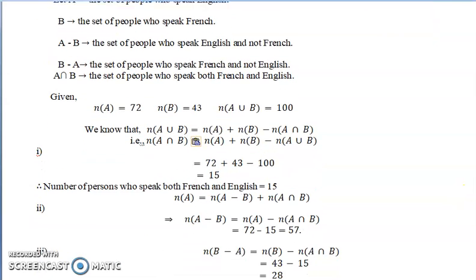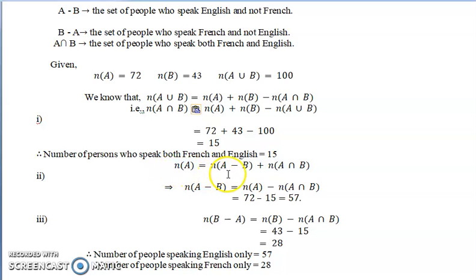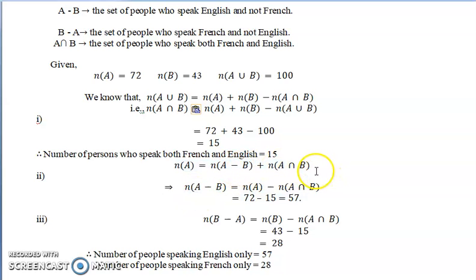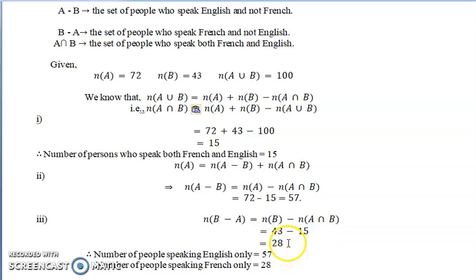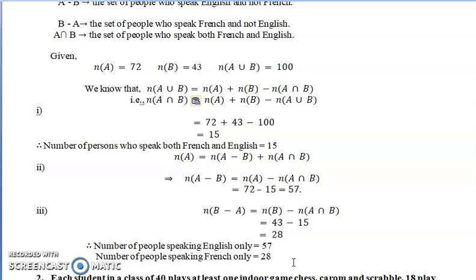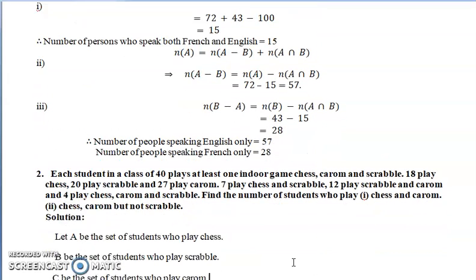Now for question two — how many can speak French only? Using the formula n(A) = n(A−B) + n(A∩B), we rearrange to find n(A−B). A indicates people who speak only English; A minus B subtracts French speakers, and A∩B is the common term. Replacing the values gives 57, meaning 57 students speak English alone. Similarly, finding n(B−A) using the analogous formula gives 28 — so 28 students speak French alone.